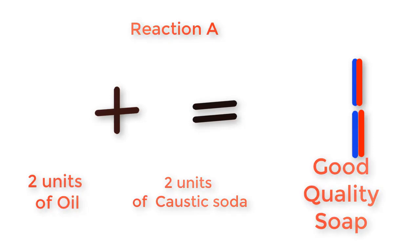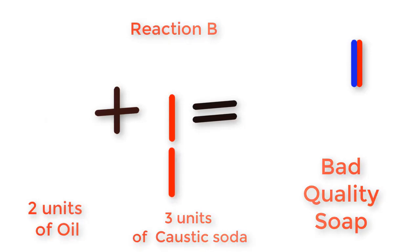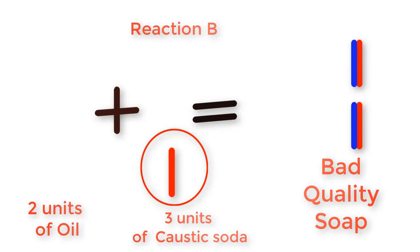Now how do we determine a bad quality soap? Let's look at Reaction B. In Reaction B, two units of oil combine with three units of caustic soda. One unit of oil combines with one unit of caustic soda to form soap, and another unit of oil combines with another unit of caustic soda to form soap — but at the end, one unit of caustic soda is left behind in the reactor and mixes with the soap. This leftover caustic soda can cause skin irritation, itching, or other skin problems. This is an example of a bad quality soap.